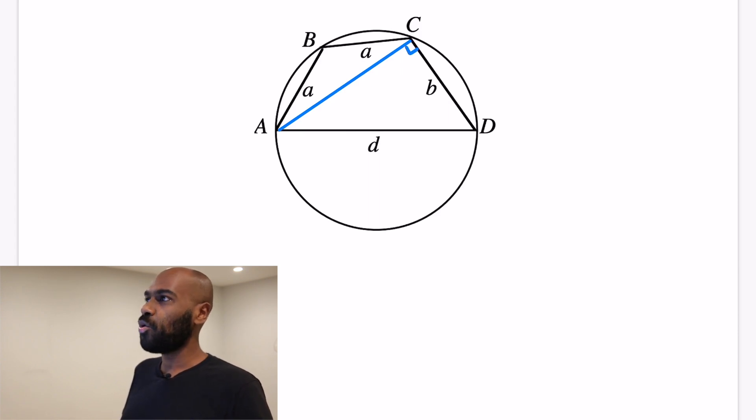So let's draw in the chord AC, and since D is a diameter, we'll have a right angle there. And then we'll label this one angle ABC with theta. Now a property of cyclic quadrilaterals is that opposite angles sum to 180, so that means the angle CDA is actually 180 degrees minus theta.